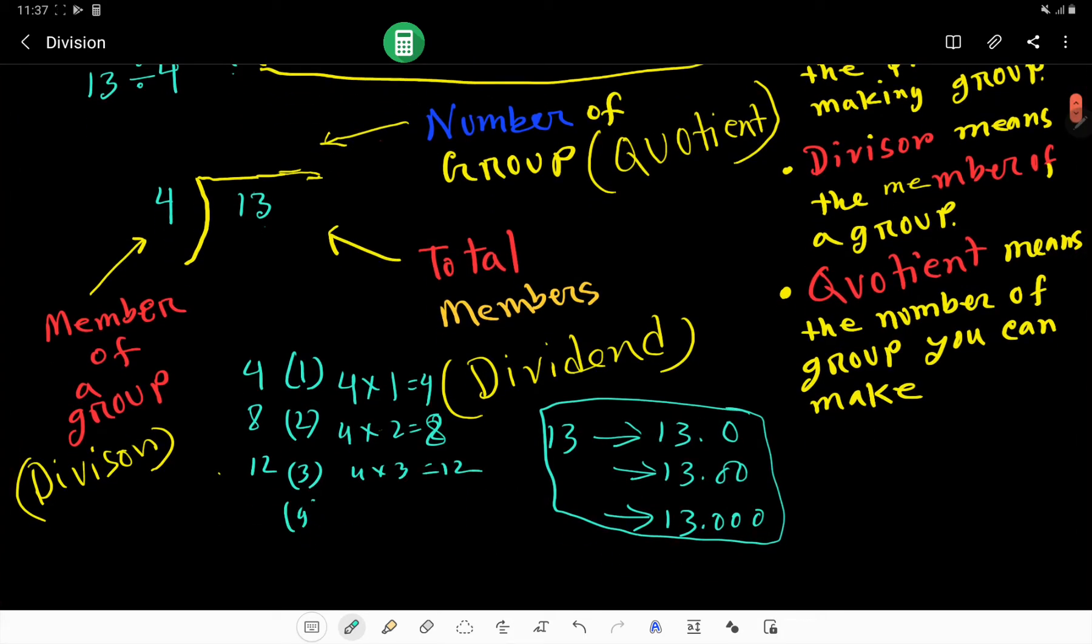Then 4 times 4: 12 plus 4 gives us 16. 16 is greater than 13, so we will target the previous one.